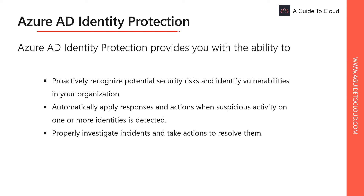Azure AD Identity Protection gives you the ability to proactively recognize potential security risks and identify vulnerabilities in your organization. It can automatically apply responses and actions when suspicious activity on one or more identities is detected, properly investigate incidents and take actions to resolve them, and protect emails and documents by automatically applying classification and labels.